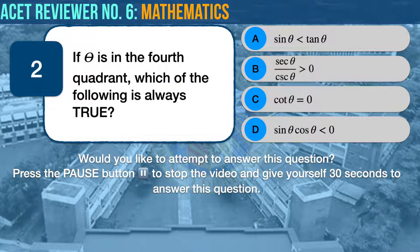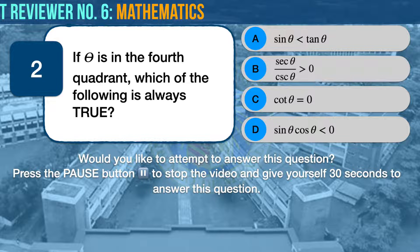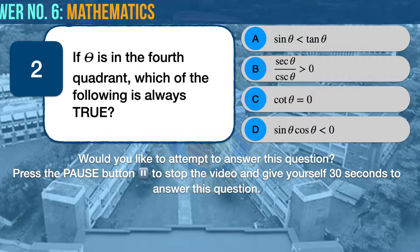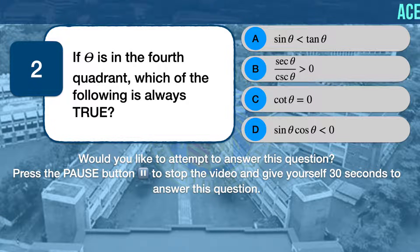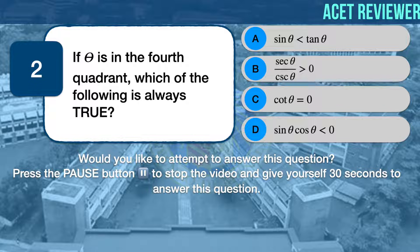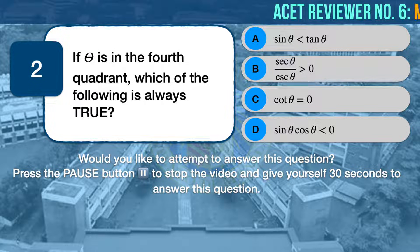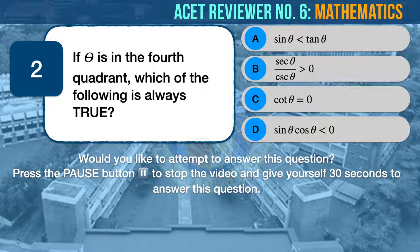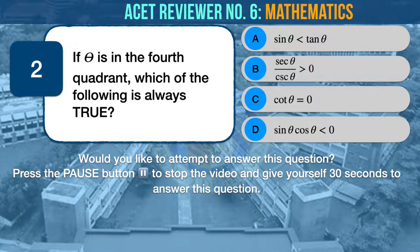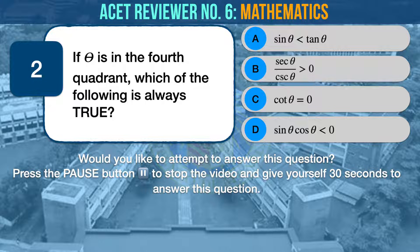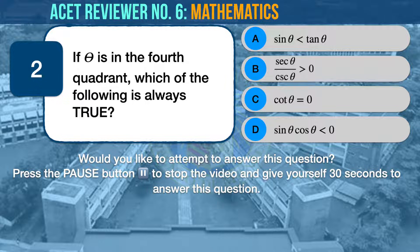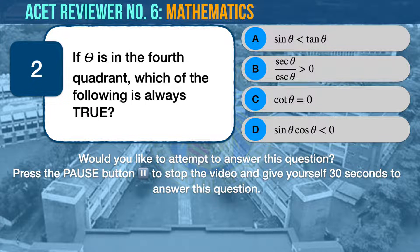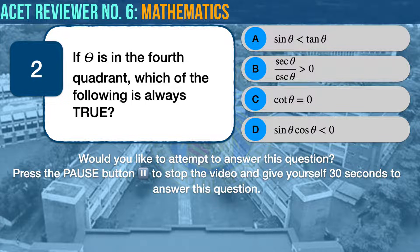Math question number two. If angle theta is in the fourth quadrant, which of the following is always true? A, sine theta is less than tangent theta; B, secant theta over cosecant theta is greater than zero; C, cotangent theta is equal to zero; D, sine theta times cosine theta is less than zero.